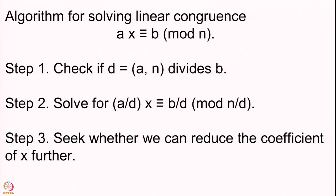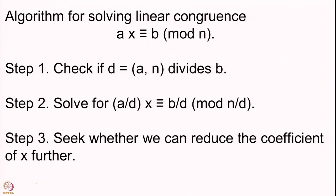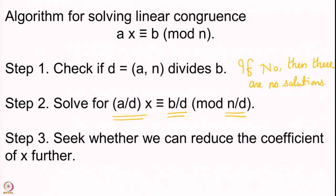In the first step, we reduce the coefficient of x and the constant term as well as the congruence by dividing by the GCD. Of course, if the answer is no — meaning the GCD does not divide b — then there are no solutions. If yes, then we proceed.